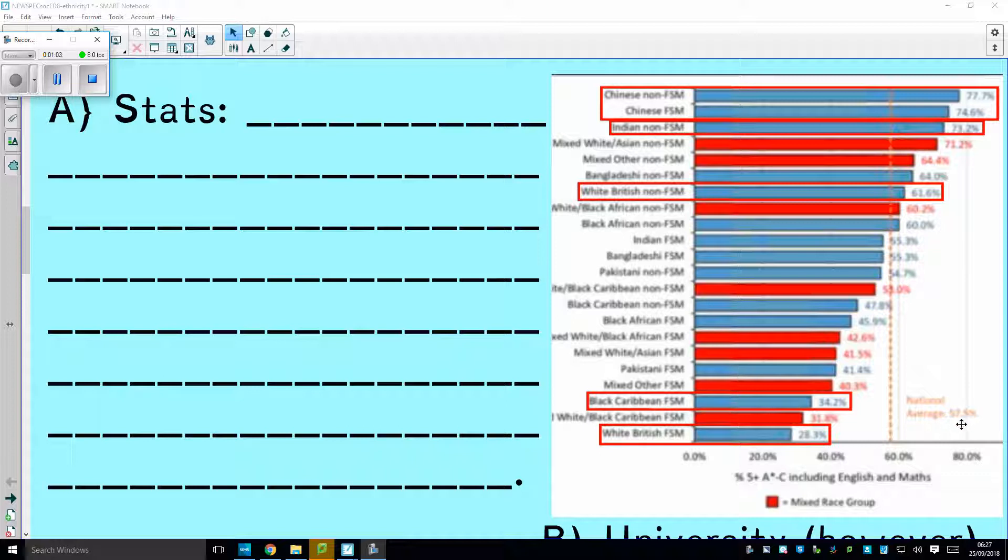The national average was 57.5% of kids got 5 A* to C, including English and Maths. You can see kids from a Chinese background in this country with the highest performing groups, followed just about by some Indian kids. FSM is free school meals, so Chinese kids who didn't get free school meals, 77.7%, highest performing group.